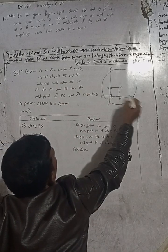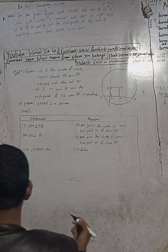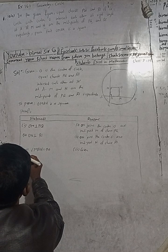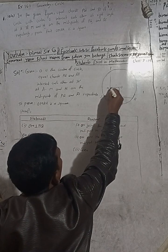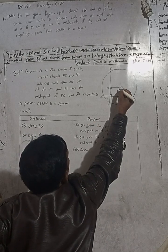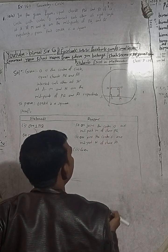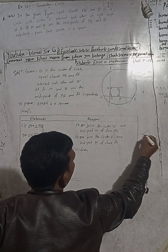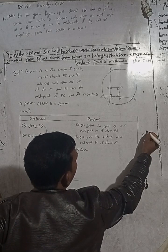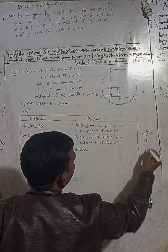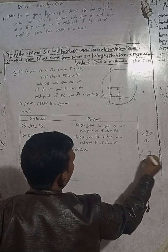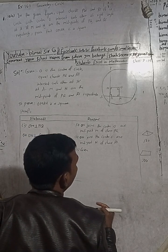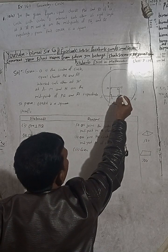PQ and RS intersect at 90 degrees at A — this is given. So angle MAN = 90 degrees. Now in quadrilateral OMAN, the sum of all angles is 360 degrees. We already have three angles each equal to 90 degrees: angle OMA = 90°, angle ONA = 90°, angle MAN = 90°. So 90 + 90 + 90 = 270 degrees.